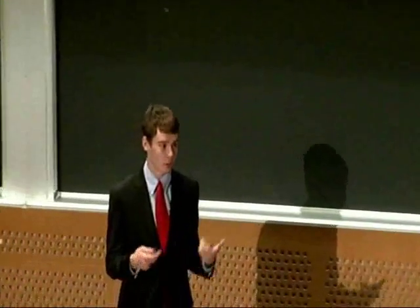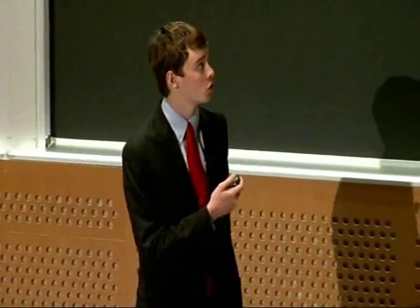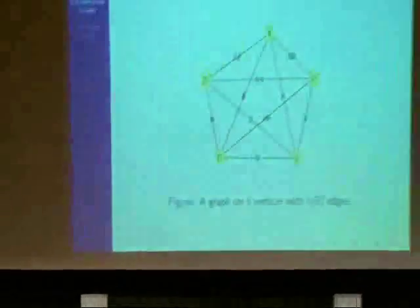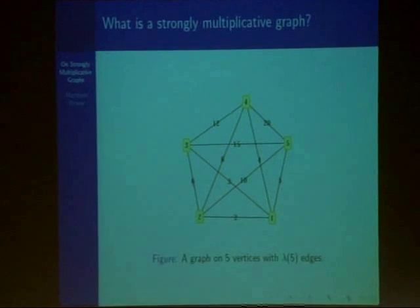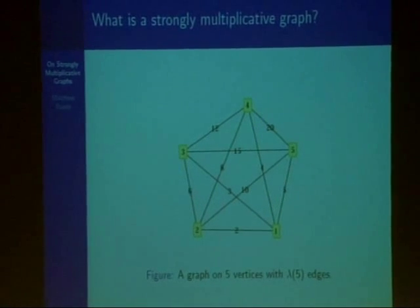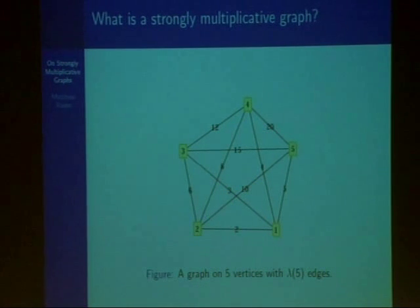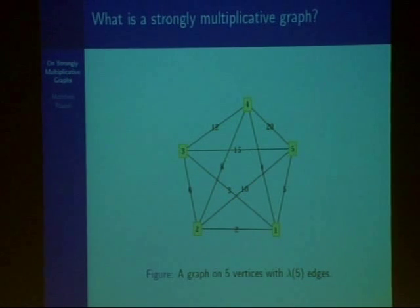Before I delve into my project, it's important to define exactly what is a strongly multiplicative graph. Here is an example of a strongly multiplicative graph on five vertices. To construct a strongly multiplicative graph, it has the property that if it has n vertices, you label these n vertices with the integers from one through n. And then anytime you construct an edge between two vertices, you label that edge with the product of the two vertices that you are connecting.